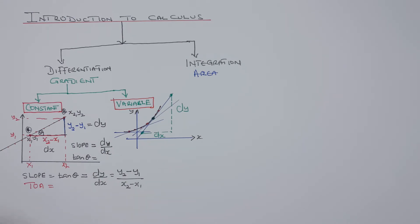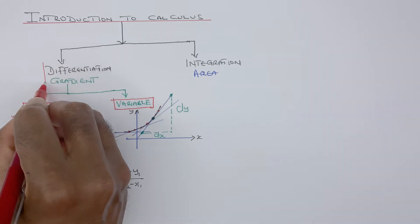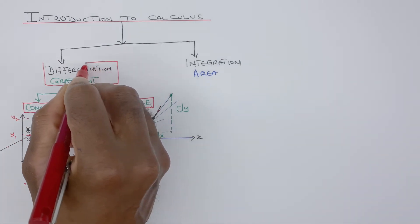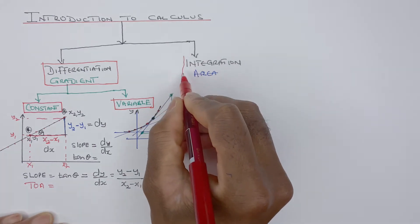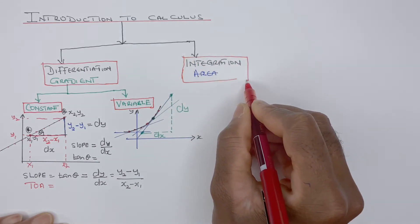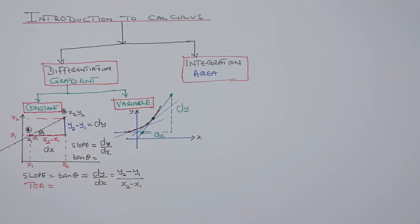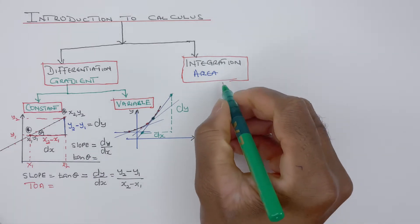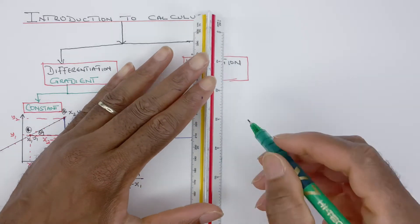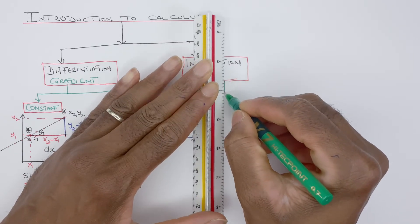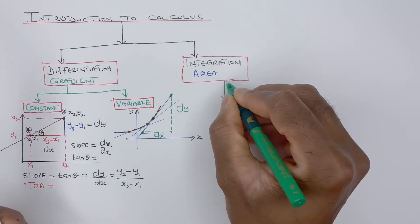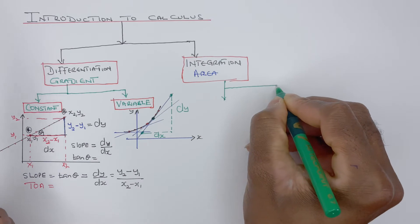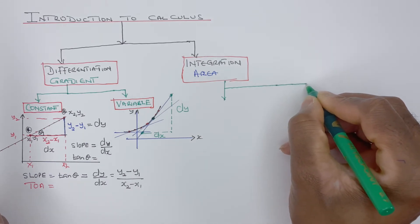Differentiation basically means finding the gradient — the slope of a line. Integration, on the other hand, means finding the area. So differentiation means you're finding the slope, the gradient of a line, and integration means you're finding the area. Integration also comes in two parts: constant integration and variable integration.